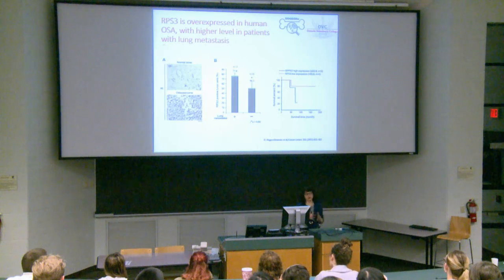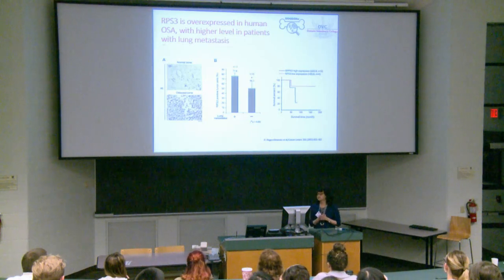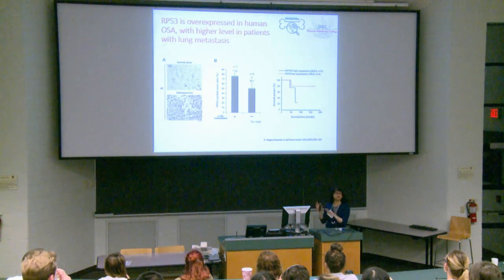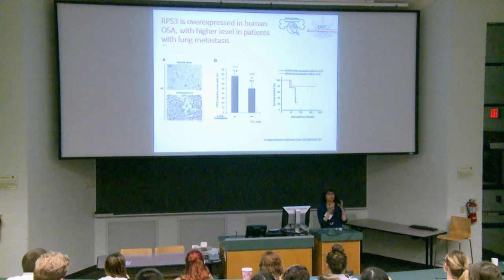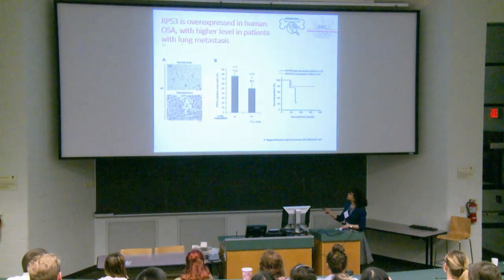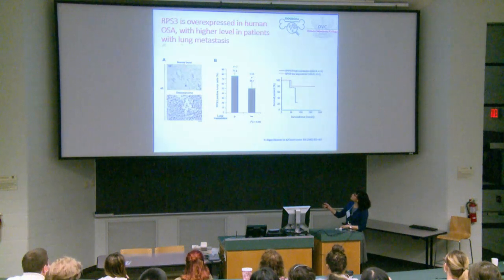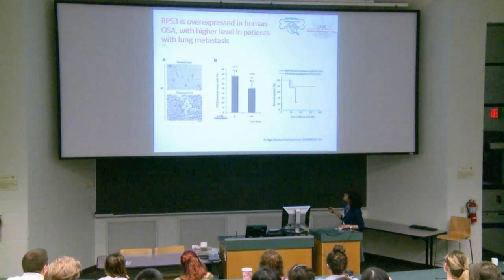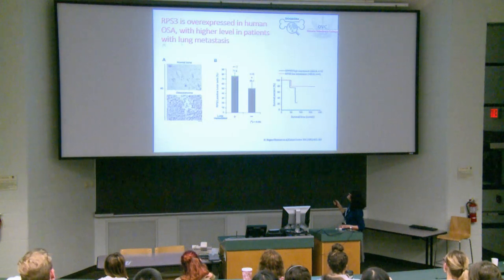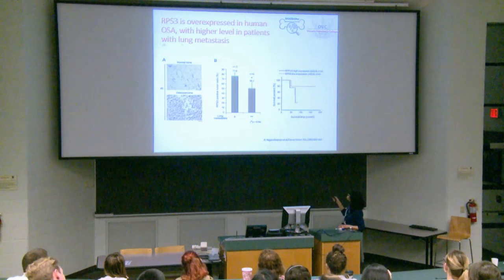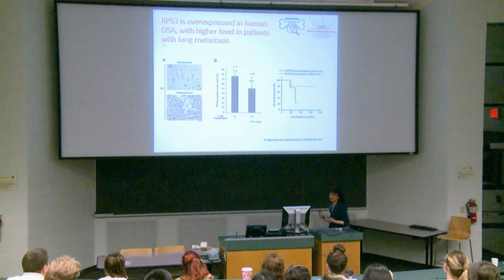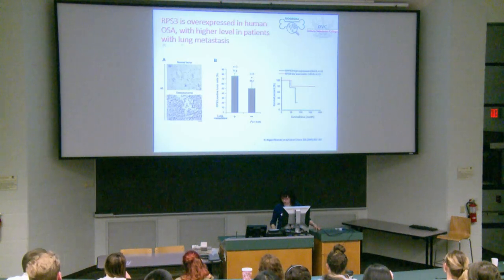A study with nine patients having matching normal bone and osteosarcoma samples showed by immunohistochemistry that RPS3 expression was very low in normal bone and very high in osteosarcoma. Patients with lung metastasis at diagnosis had higher RPS3 expression than those without. Survival analysis showed patients with higher expression had worse survival than those with low expression, although this was not statistically significant given the small sample size.